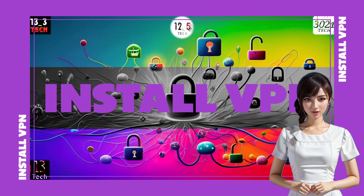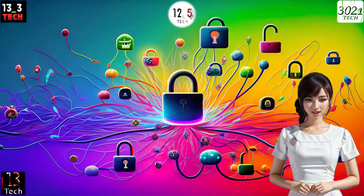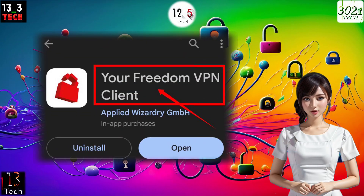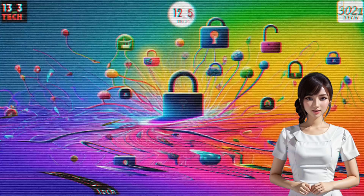Step 1: Install VPN. Let's get started. First, head over to your mobile app store and download and install your Freedom VPN.